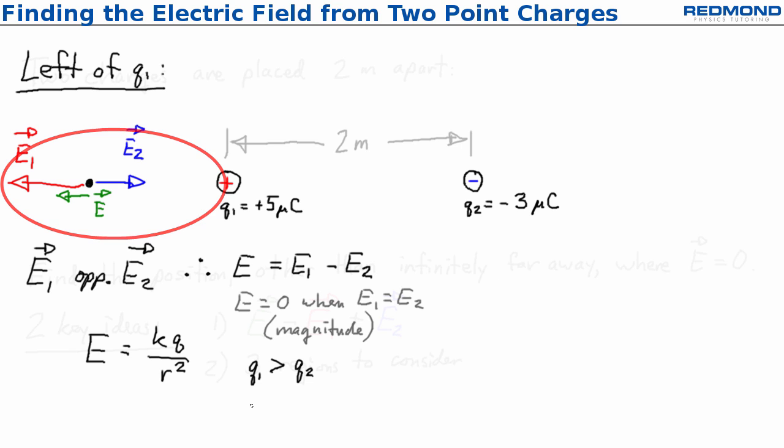In this region left of Q1, every single point is closer to Q1 than Q2. This means that R1 is less than R2, and since R squared is in the denominator, the E1 denominator must be smaller everywhere in this region.